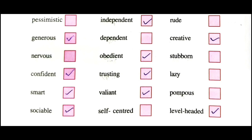Next: 'nervous' - nervous means related to nerves, being shaky or anxious. Nick does not have this quality so we don't tick it. Next: 'obedient' - obedient means vinayam, showing respect and obedience. Tick this one. Next: 'stubborn' - stubborn means having strong determination not to change one's attitude or decision, not being willing to change. Next: 'confident' - Nick has this quality so give the tick mark.